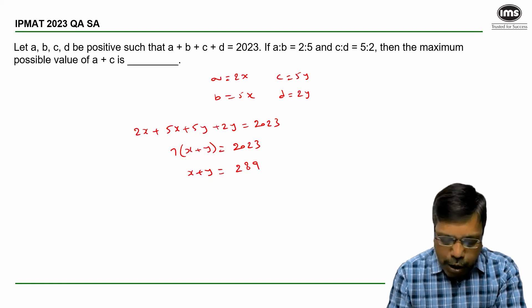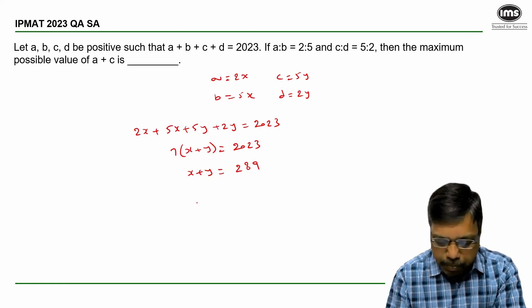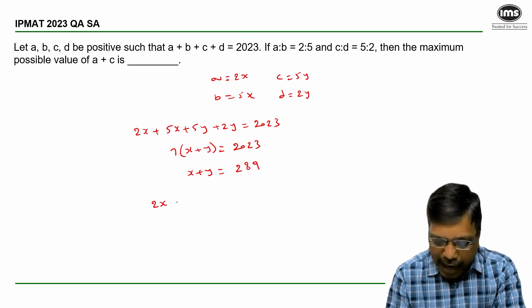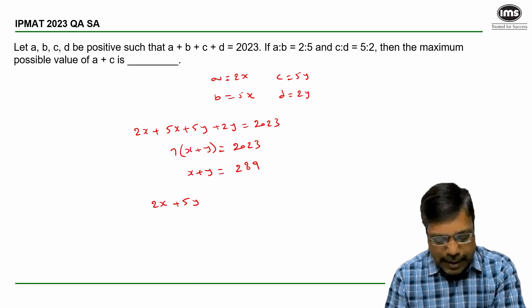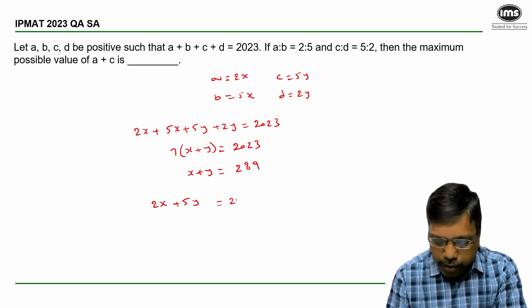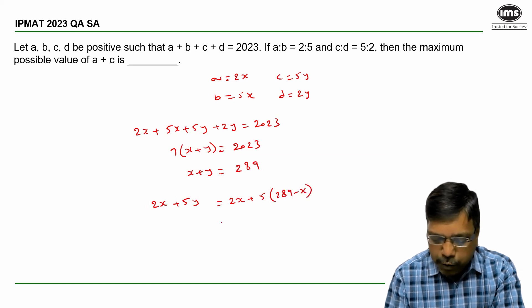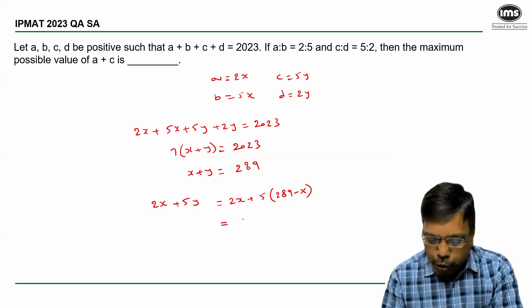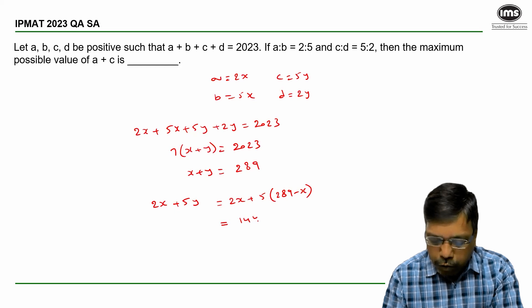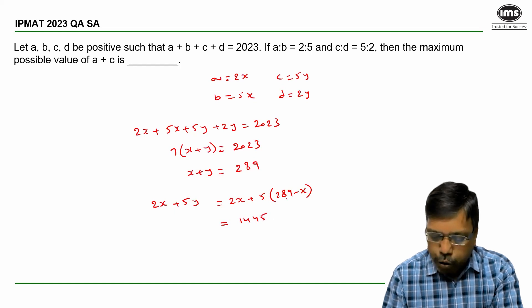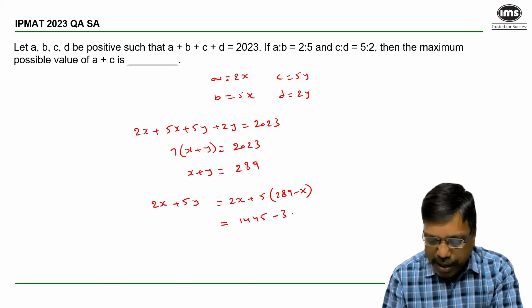Now, the value of A plus C. A is 2x and C is 5y. Now, I want the maximum possible value for this. What if I replace y with 289 minus x from the previous equation? Now, 5 into 289 is 1445. Now, 2x minus 5x is minus 3x.